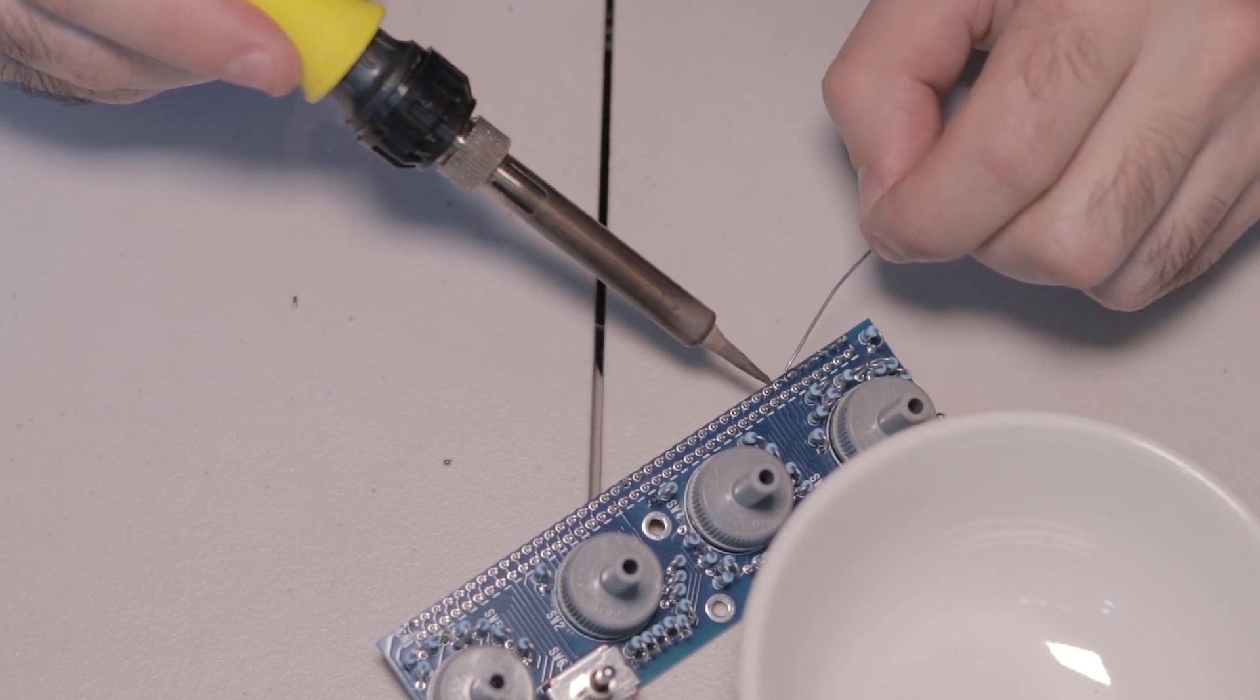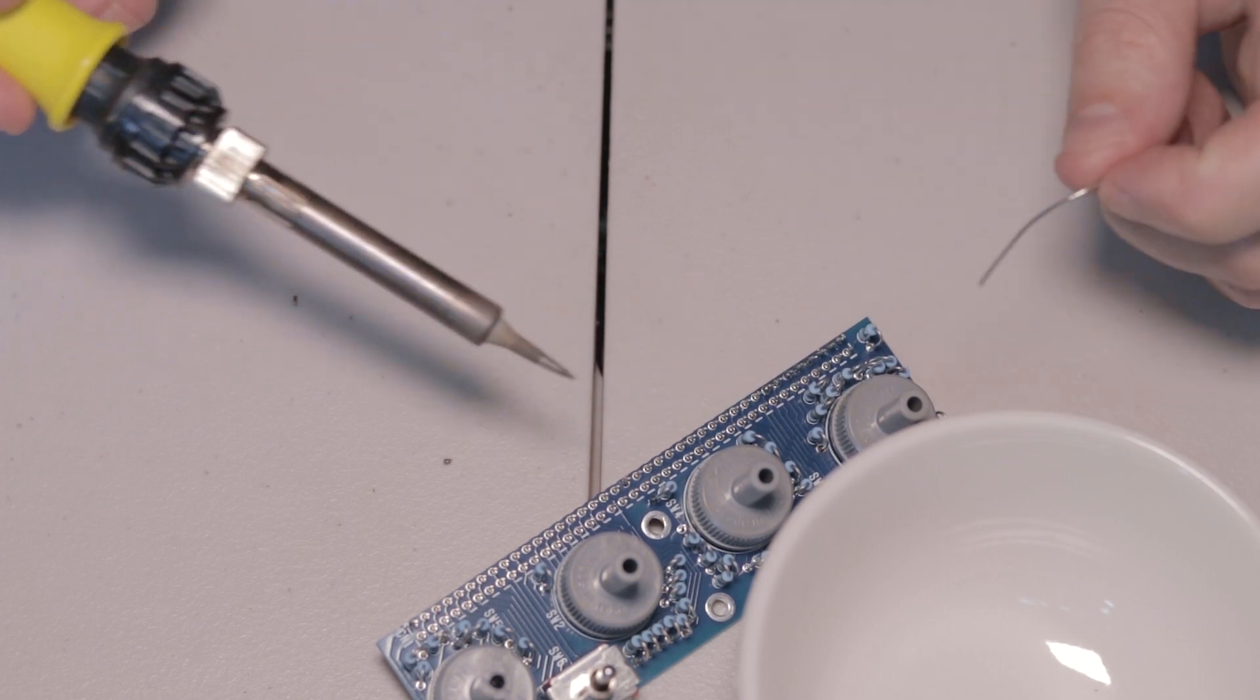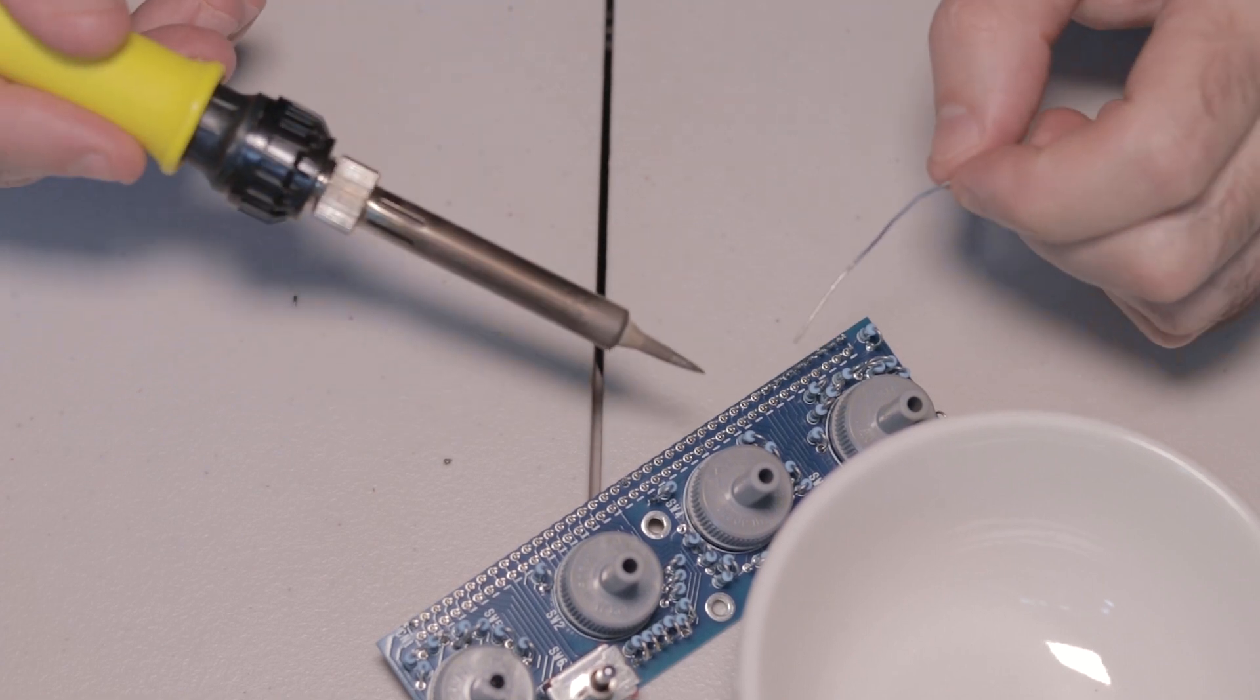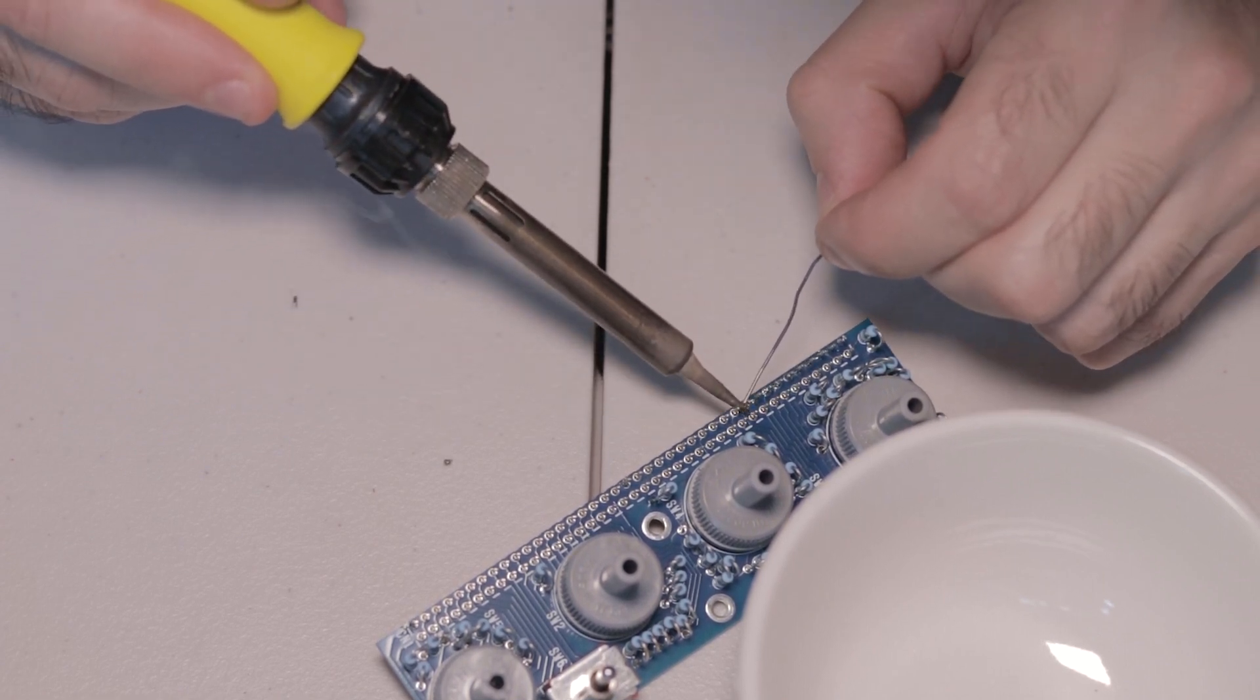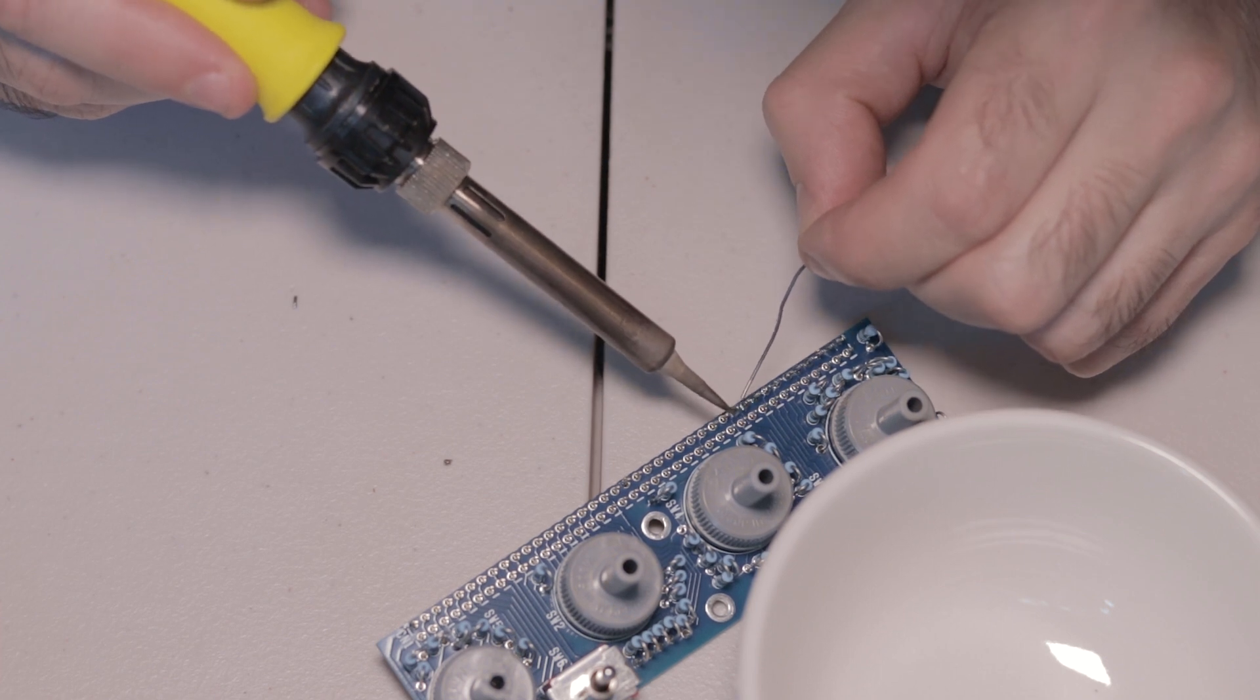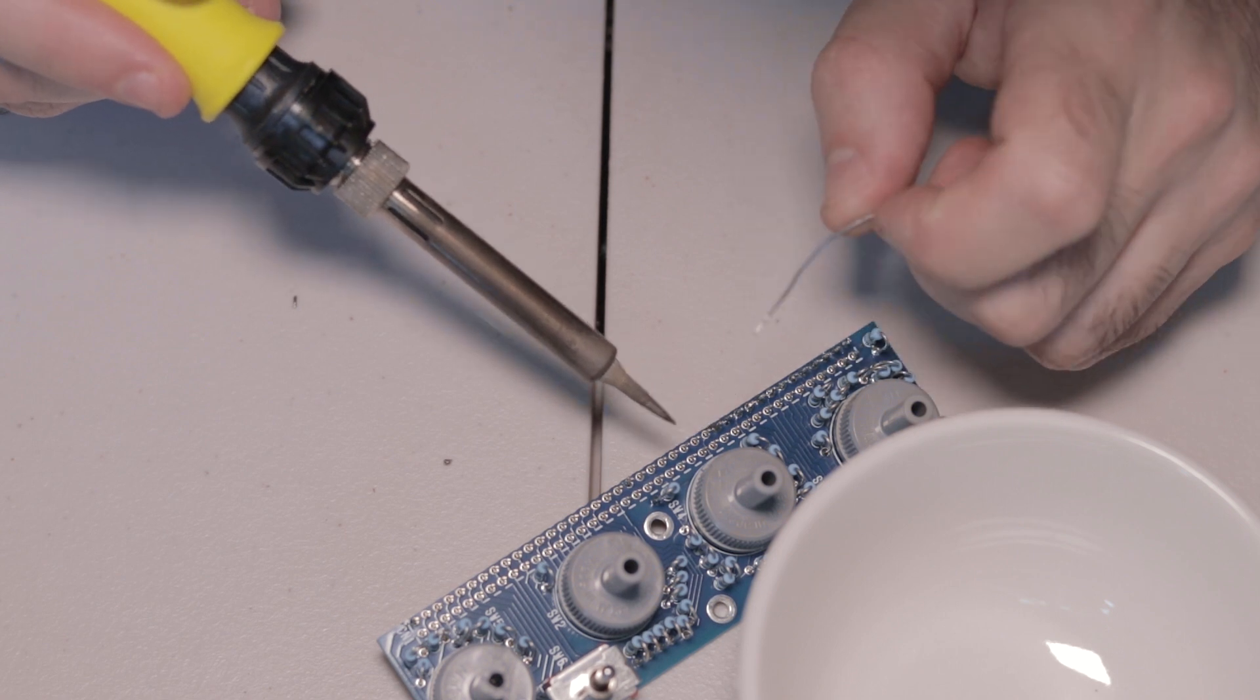And once you've got it flat on the board, you can go ahead, like I show here, and solder all of the external pins first. Just be careful, they are really close together, and you don't want to accidentally create a short between any of these, but just make sure you don't add too much solder is really the trick.